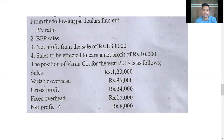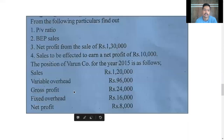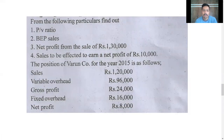The position of a company for the year 2015 is as follows: Sales 1,20,000; Variable overhead 96,000; Gross profit (contribution) 24,000; Fixed overhead 6,000; Net profit 8,000. Very simple — this is a very easy question you can solve within 10 minutes.